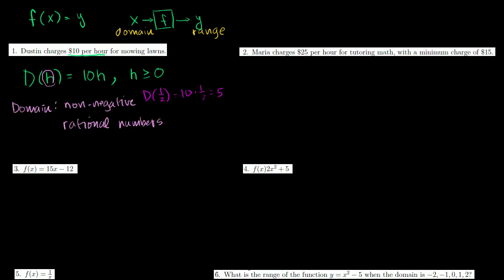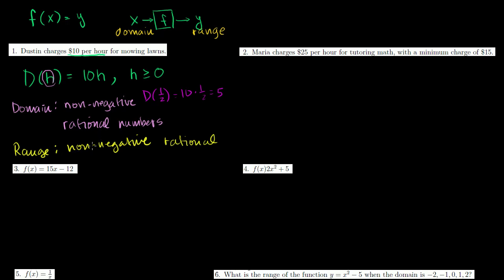For the range: whatever number you put in for h — and you can only put in non-negative rational values — you're going to get positive values for 10h, the value of the function. So the range is also non-negative rational numbers. If you put a rational number in and multiply it by 10, it's still going to be a rational number. You could say any number expressible as a dollar amount, but the range is non-negative rationals.